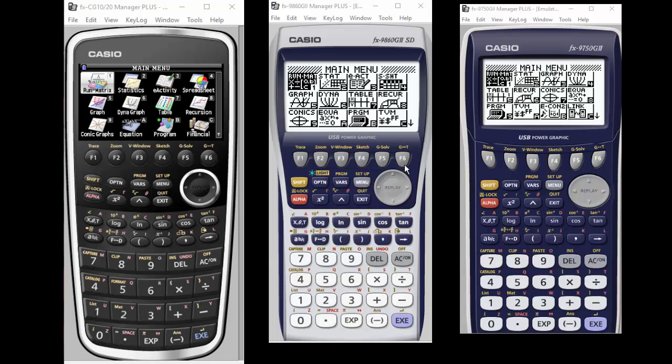We've got the three: the Prism on the left, the 9860 in the center, and the 9750 on the right.